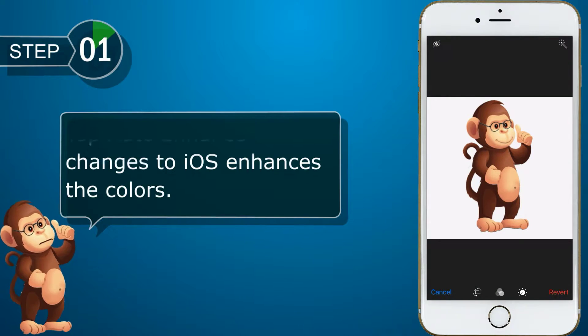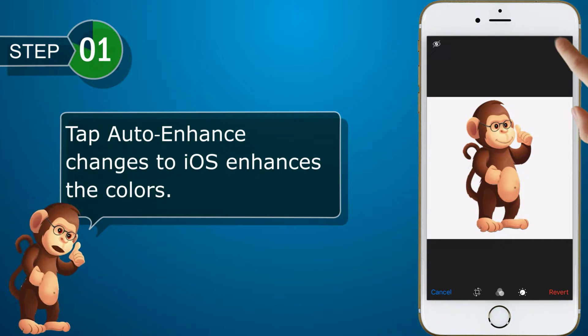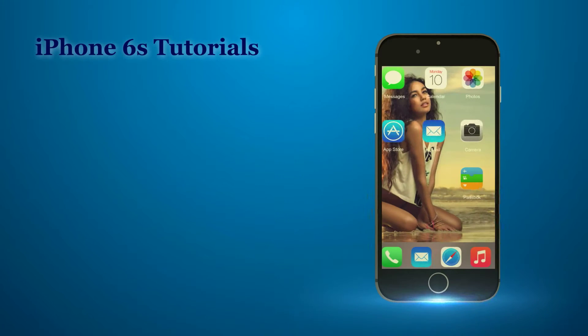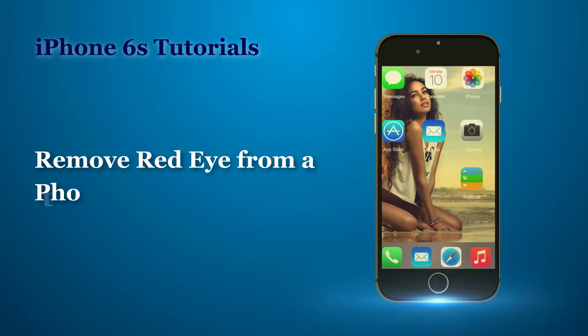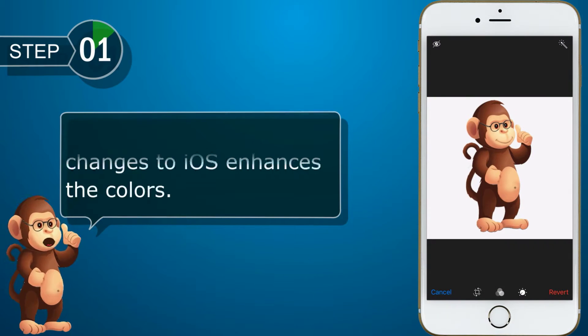Tap Auto Enhance. iOS enhances the colors. Tap Auto Enhance again to toggle.